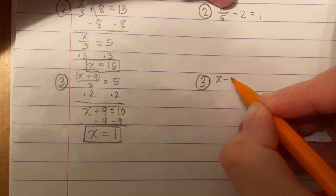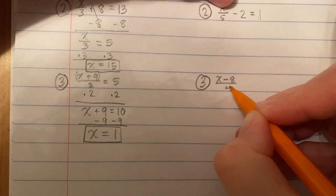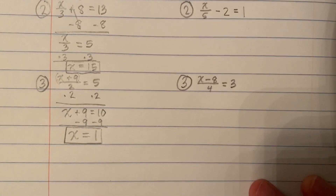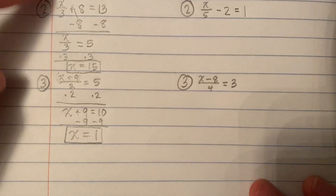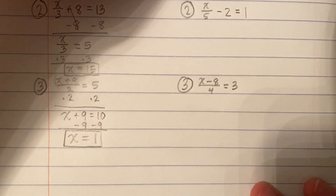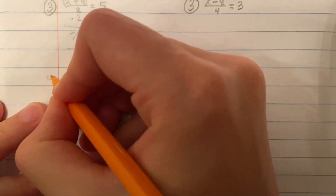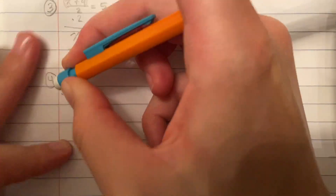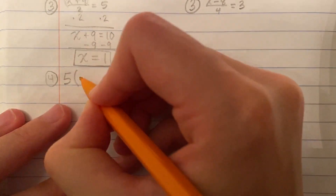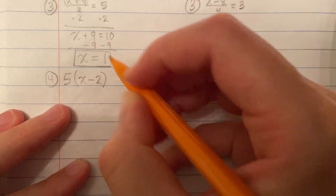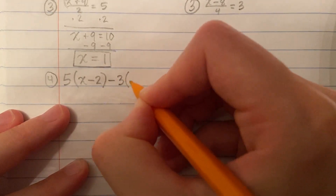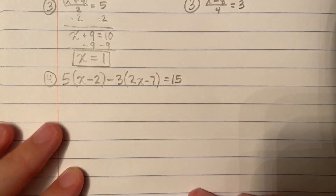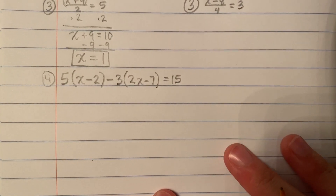Here is practice problem number 3. After each example, please pause and do the practice problem. If you turn in your work and haven't done the practice problems, you're getting a zero — the whole purpose is that you take the opportunity to get the examples and do your practice problems. Here is number 4: 5 times X minus 2, minus 3 times 2X minus 7, equals 15. This is long but we know how to do it — we'll go step by step.